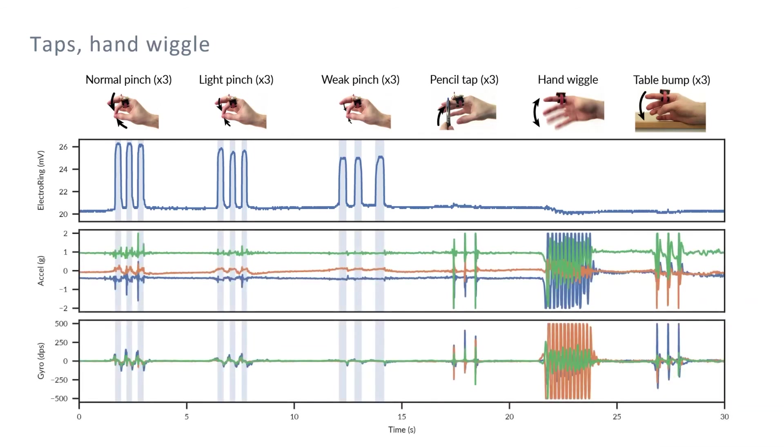To illustrate this further, here are corresponding outputs from an accelerometer and gyroscope placed on the ring. You can see the finger velocity and impact decreasing from the first to the third pinch, to the point where it's almost in the noise of the IMU signal. The touch signal, on the other hand, is largely unaffected.